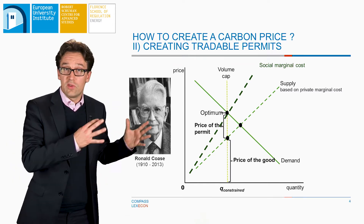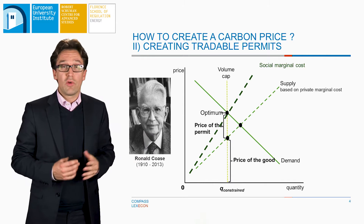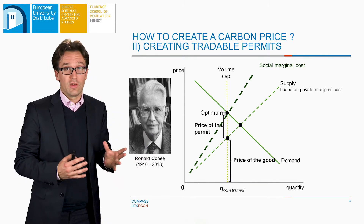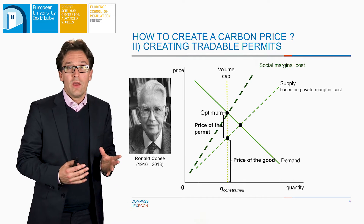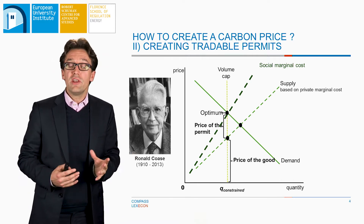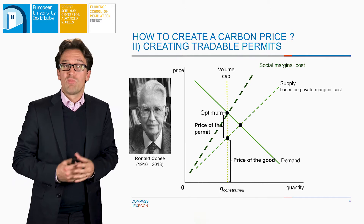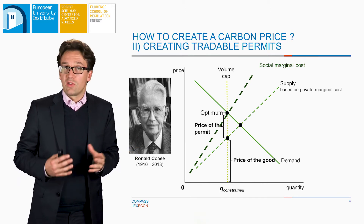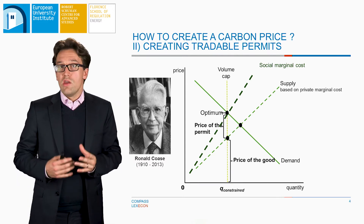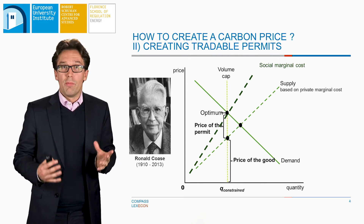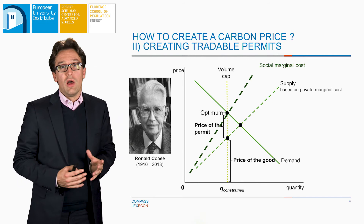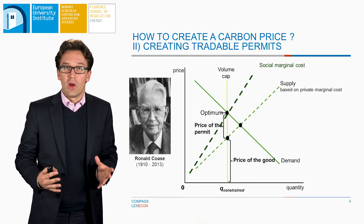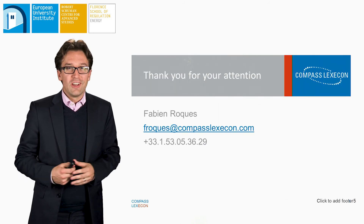To conclude, this theory of how you can correct for externality effects on market equilibrium is what underpins a lot of the public interventions we see in markets. In the energy space, for instance, taxation of carbon or emission trading schemes for carbon are based on these ideas that you need to correct for the effect of these externalities on the equilibrium price. Thank you very much for your attention.